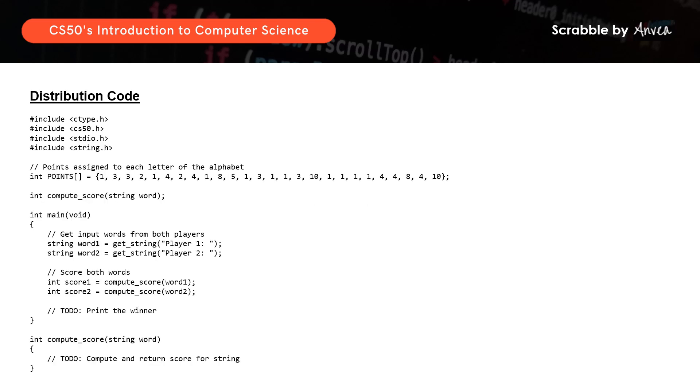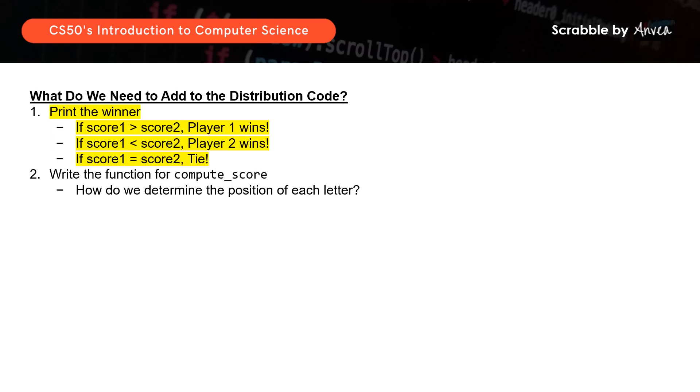So for this lab, we are also given a distribution code, which is the starter code with a lot of information already filled in for us. You can see that the parts that we need to fill in are, how to print the winner, and how to compute and return the score for the string.